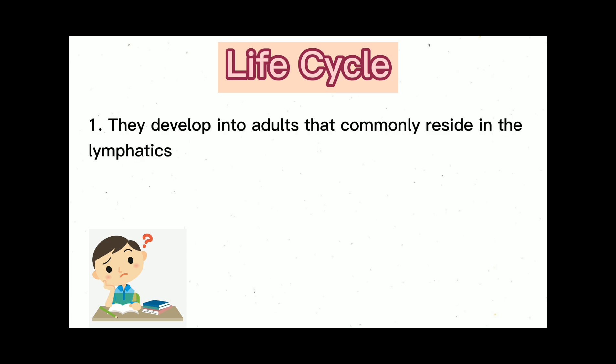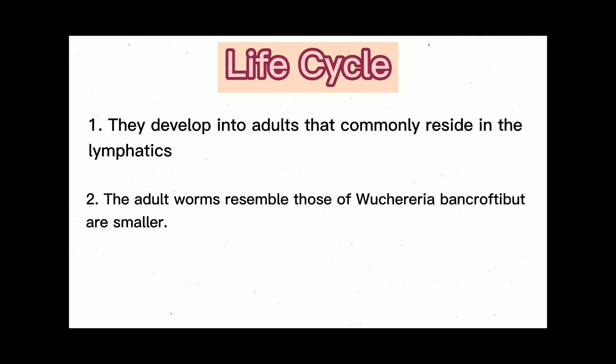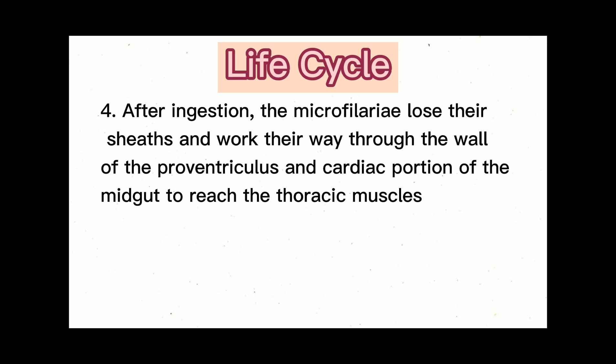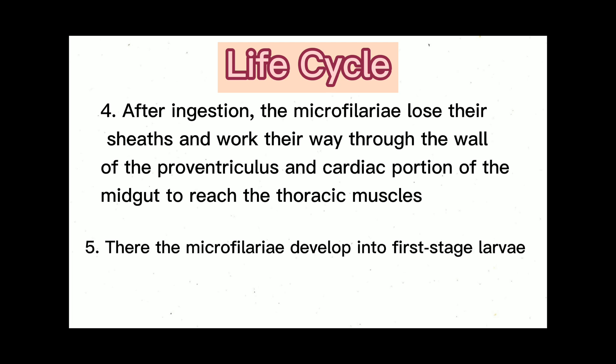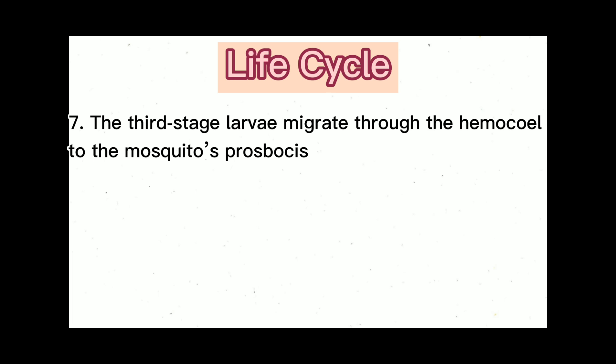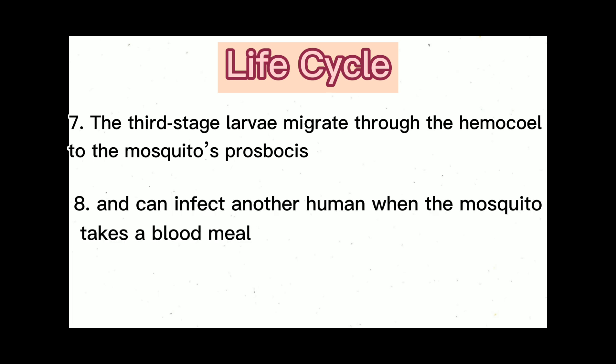Now let's proceed to the life cycle. First, they develop into adults that commonly reside in the lymphatics. Second, the adult worms resemble those of Wuchereria bancrofti but are smaller. Third, a mosquito ingests the microfilariae during a blood meal. Fourth, after ingestion, the microfilariae lose their sheaths and work their way through the wall of the proventriculus and cardiac portion of the midgut to reach the thoracic muscle. Fifth, the microfilariae develop into first-stage larvae. Sixth, and subsequently into third-stage larvae. Seventh, the third-stage larvae migrate through the hemocoel to the mosquito's proboscis and can infect another human when the mosquito takes a blood meal.